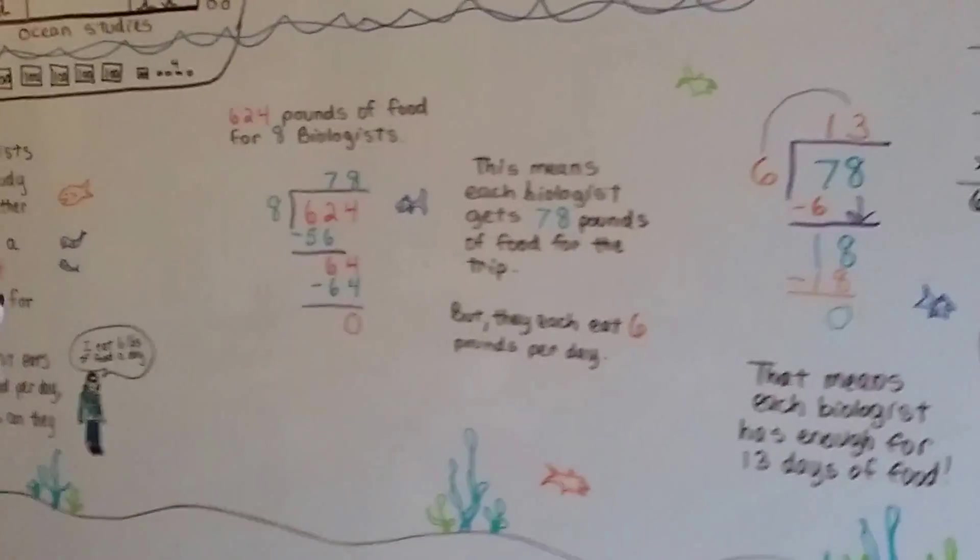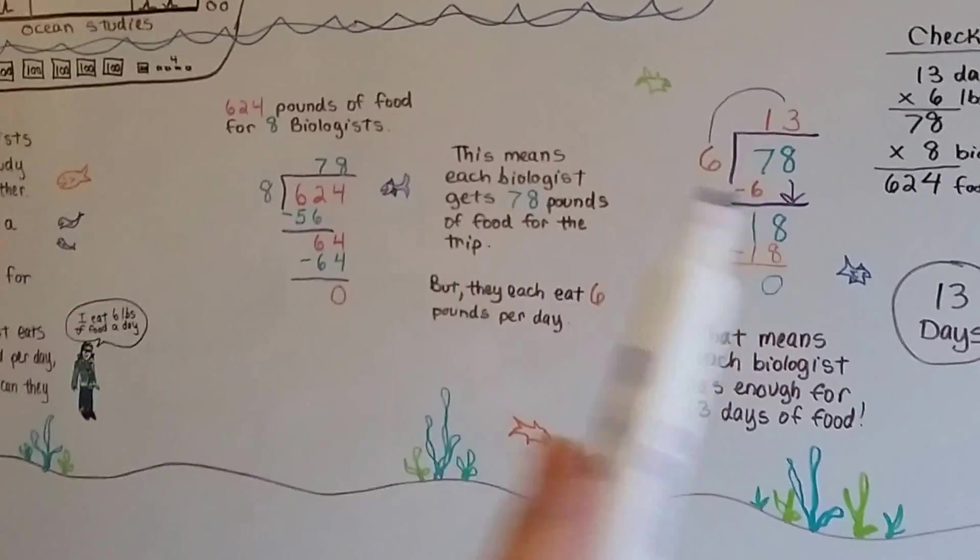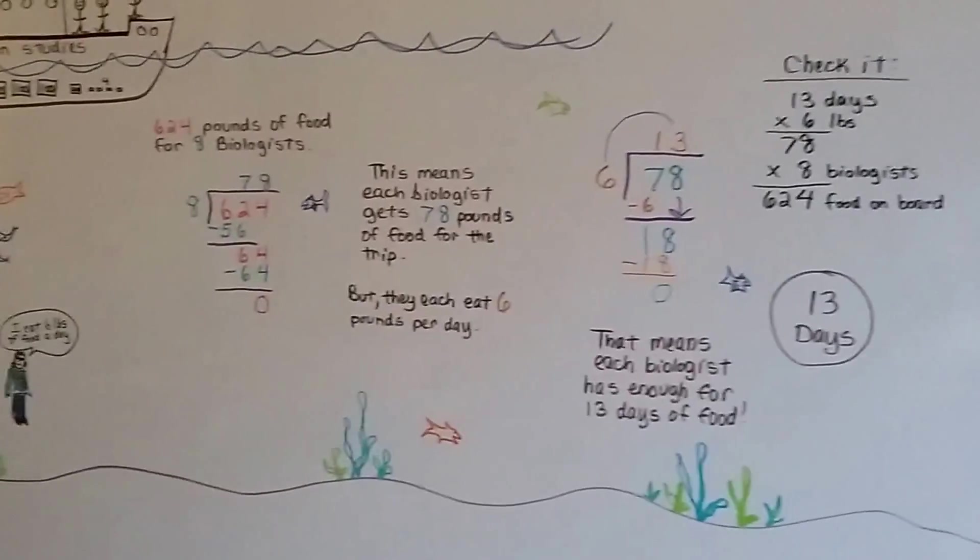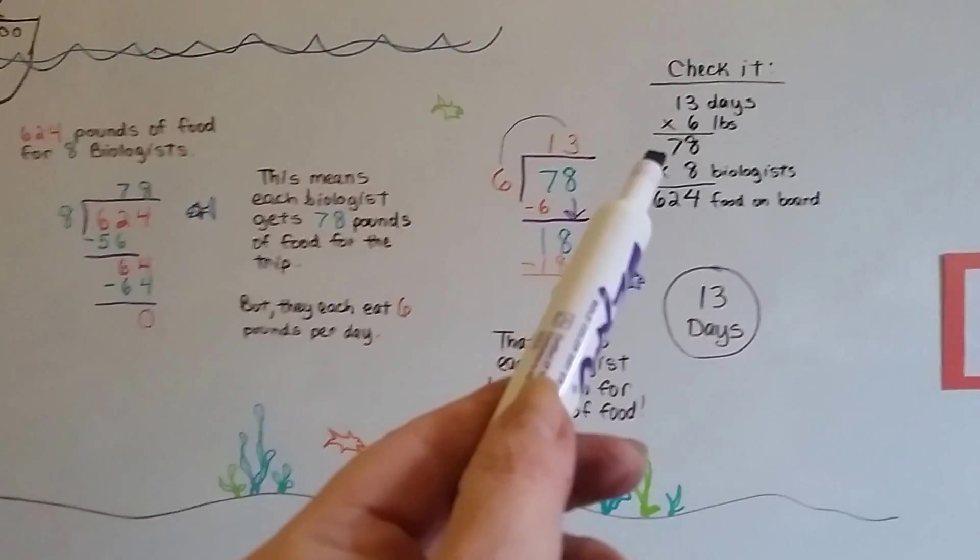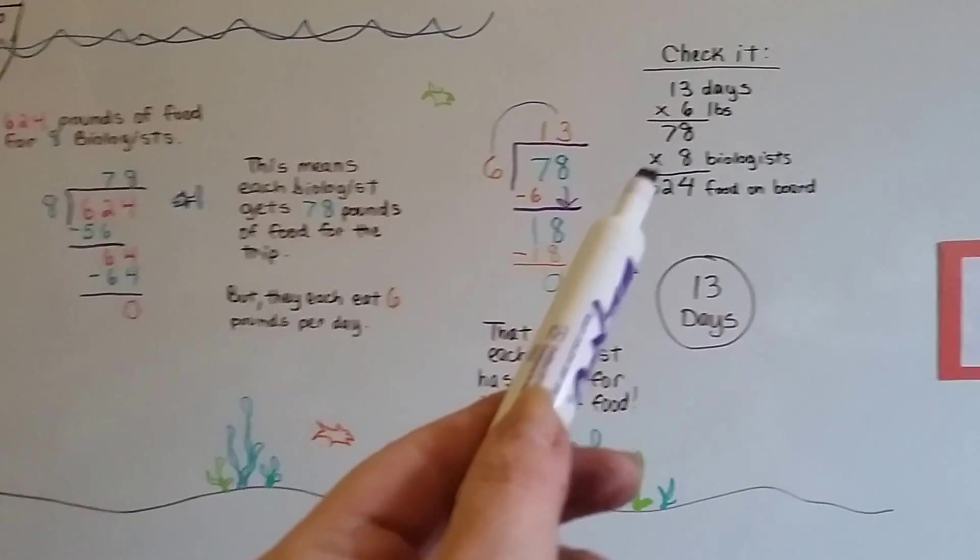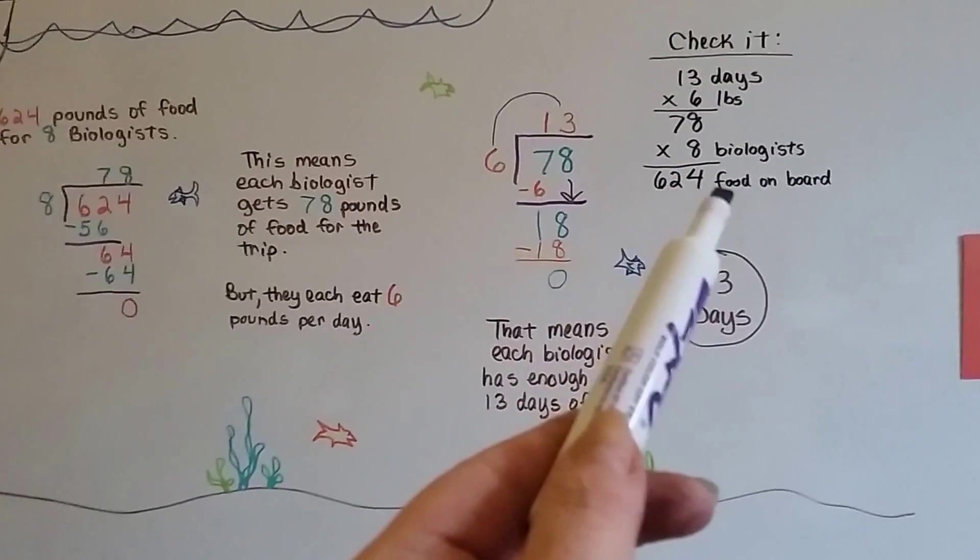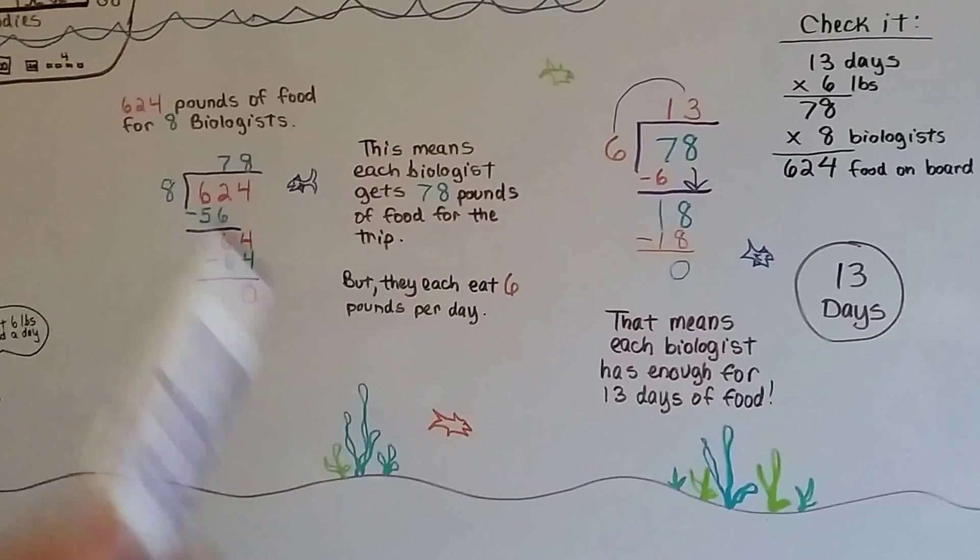So we took the information, we had to do division twice. And we can check it. 13 days times six pounds is 78, 78 pounds of food. And if you multiply that by eight biologists, that's 624. So we know we did our math correctly.